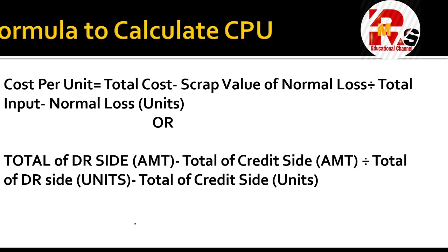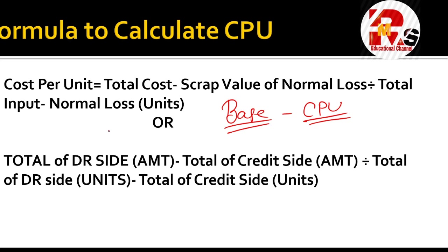Today's lecture covers the theoretical base of process costing, which will be used in practical problem solving. The most important formula you need to know is for calculating Cost Per Unit, abbreviated as CPU. CPU is the base of process costing and will be used for calculating abnormal loss or abnormal gain amounts.